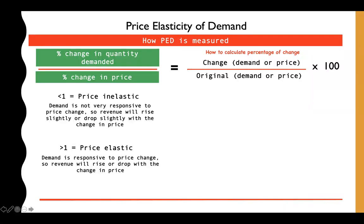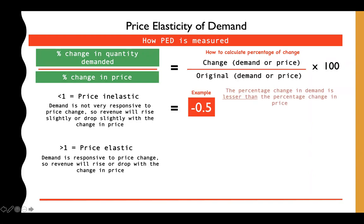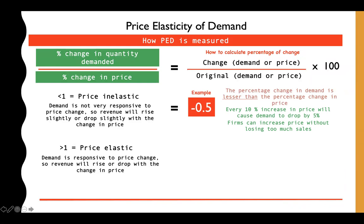A result of less than one tells you demand is not very responsive to price change. Even if you increase price, demand will drop very little — the percentage change in demand is less than the percentage change in price. For example, for every 10% increase in price, demand may only drop by 5%. Firms may still choose to increase prices to make more money without losing too many sales.